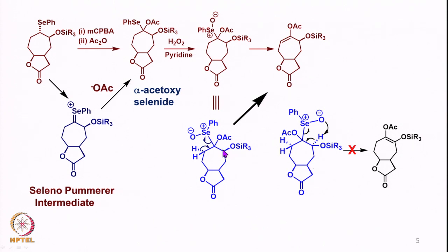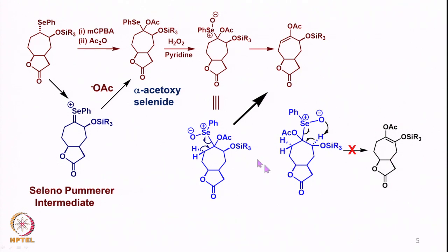Considering why elimination did not take place on the right side: if the carbon-hydrogen bond is alpha-oriented on that side, the oxygen approaching the hydrogen attached to the same carbon as the OSIR3 group brings the electrons on the oxygen very close to the oxygen electrons there, creating electronic repulsion as well as steric repulsion. These electronic and steric factors do not easily allow elimination to occur on the right side, so that product is not formed — only the left-side elimination product is obtained.